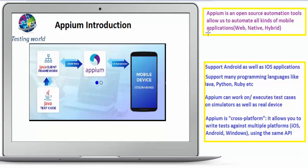So what is APM? APM is an open source automation tool, or we can call it an open source automation framework, which allows us to automate different types of mobile applications. It could be a web application, it could be a native application, it could be a hybrid application.